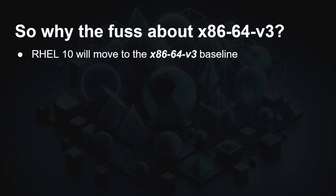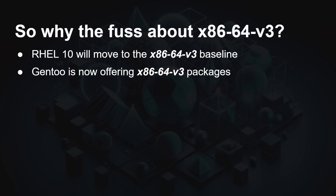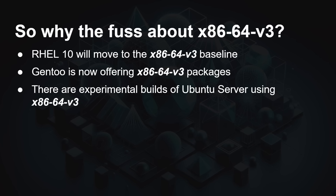So why is there all the fuss? Red Hat Enterprise Linux 10 will move to the v3 baseline. Gentoo is now offering v3 packages. There are experimental builds of Ubuntu Server using v3. This basically means that when they compile the distro, they use the right compiler flags to ensure that AVX2 can be used when applicable — rather than traditional floating point — or use the FMA instruction where possible. When the compiler encounters a particular sequence, it can say 'I can do that in hardware using these features,' but it requires that hardware support.